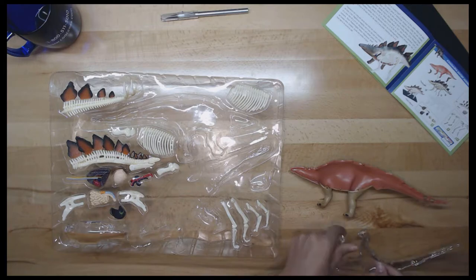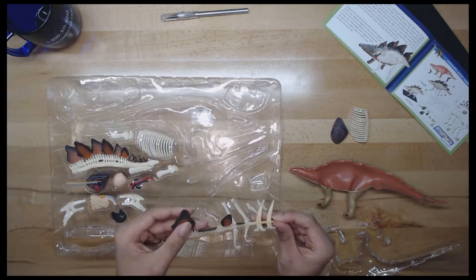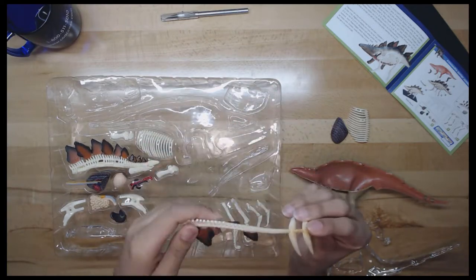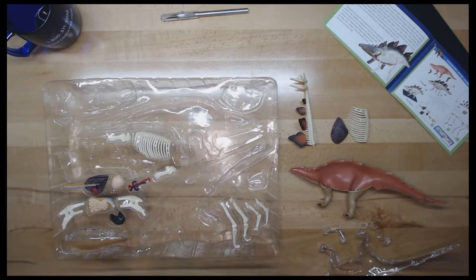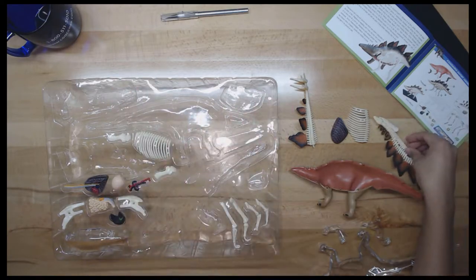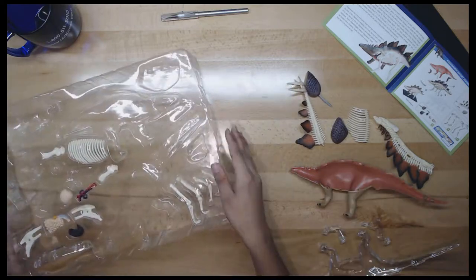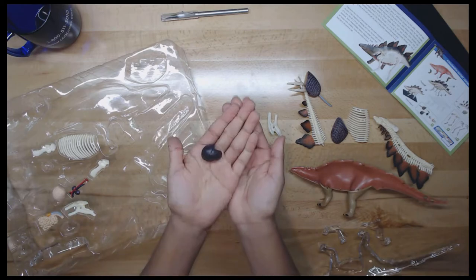This quadrupedal dinosaur was one of the most easily identifiable species due to the distinctive double row of kite-shaped bony plates rising along at the back and with two pairs of long spikes extending near the end of the tail. Stegosaurus had a long and narrow head which was small in proportion to the body. In fact, Stegosaurus weighing over 5 tons, it only had a brain of no more than 8 grams or 2.8 ounces.